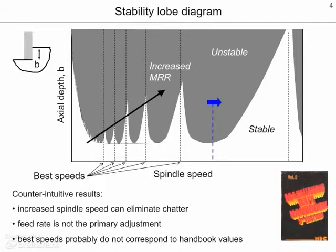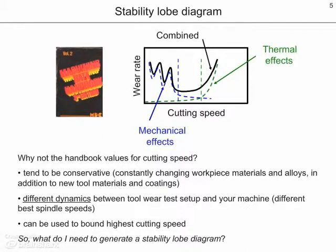These are identified as the best speeds on the diagram and show the peaks of the stability lobes. This diagram represents some counterintuitive results. The first is that increased spindle speed can be used to eliminate chatter. The second is that feed rate is not the primary adjustment. And finally, these best speeds probably do not correspond to the handbook values. The reason is that handbook values tend to be conservative, and there are different dynamics between the toolware test setup used to identify the handbook values and your machine.